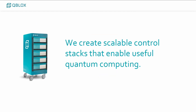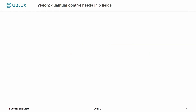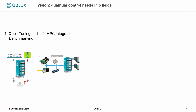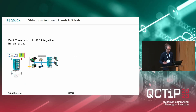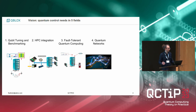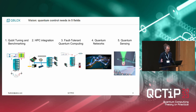We create scalable control stacks for useful quantum computing, and we are encompassing five fields in our vision: first is qubit tuning and benchmarking — so you have a big chip, you want to characterize it and tune it up. Then we have HPC integration and quantum computing, quantum networks, and also we're looking towards quantum sensing.